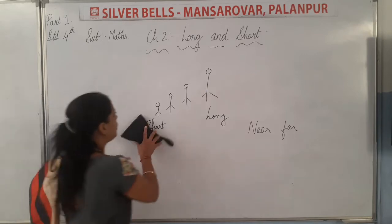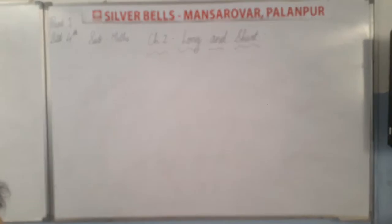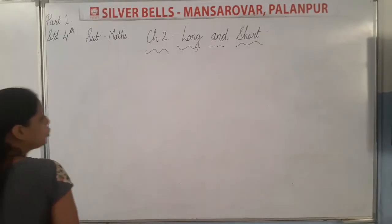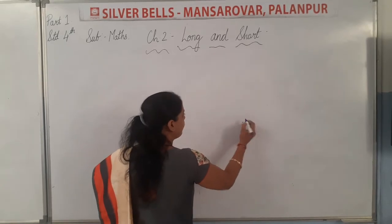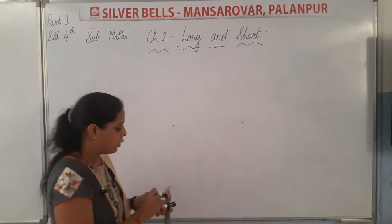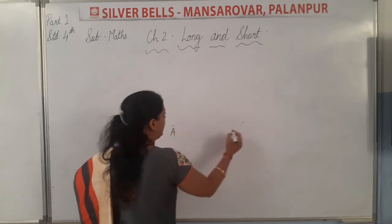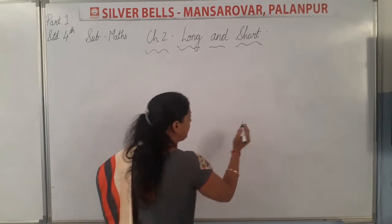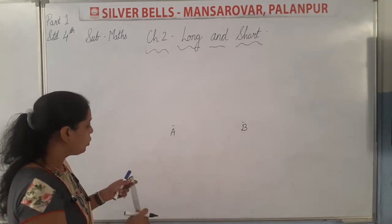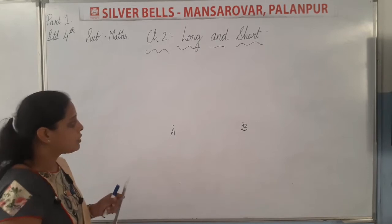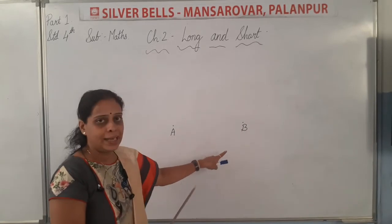So, now here, we are going to learn — the first section is how to measure the distance between two points. Two points are given to you, and you have to find the length. What is the length? Now, these are points — suppose this point is A and this point is B. Now, I have to measure the distance between the two. The distance between two points is always measured in centimetres.